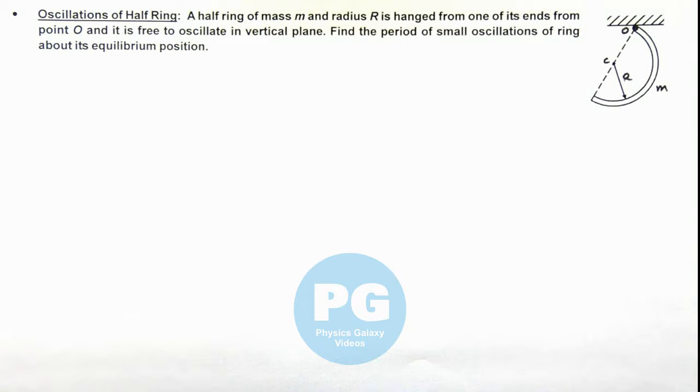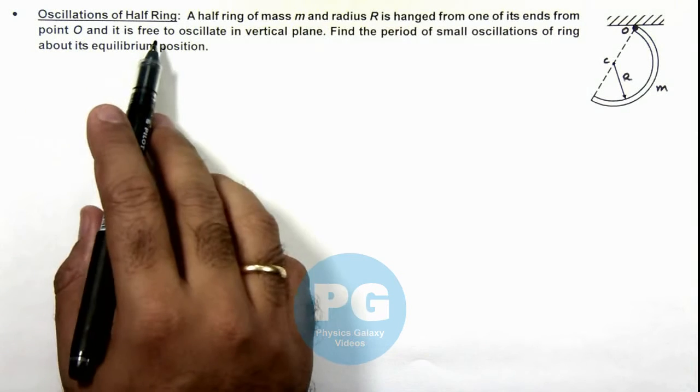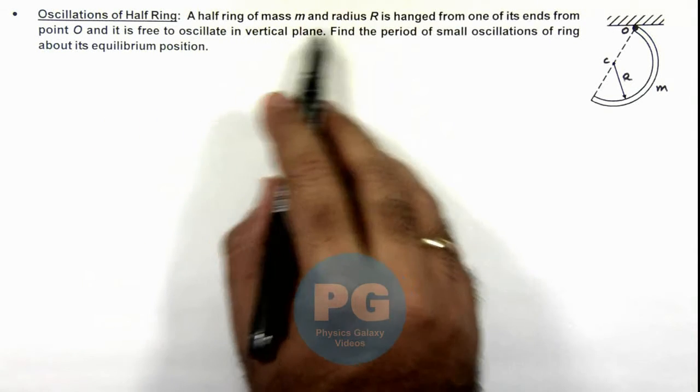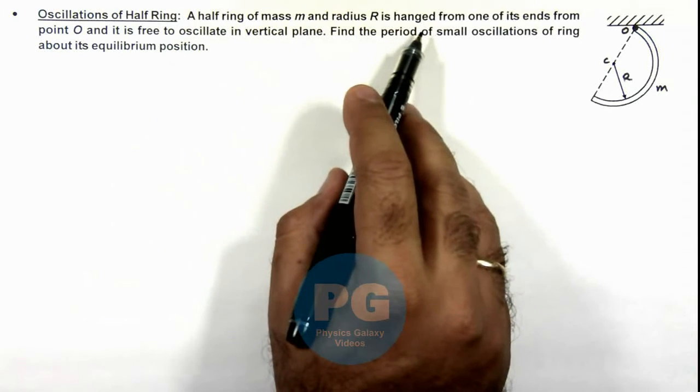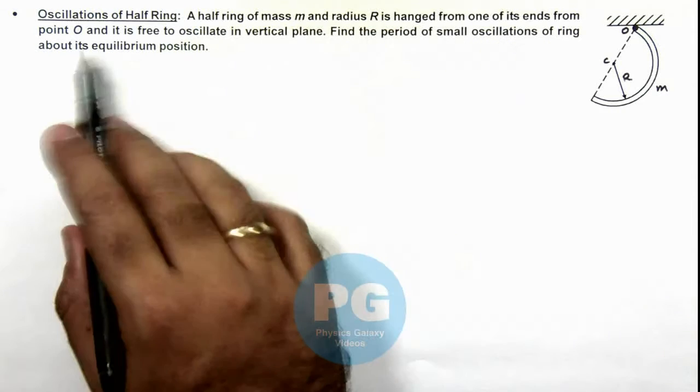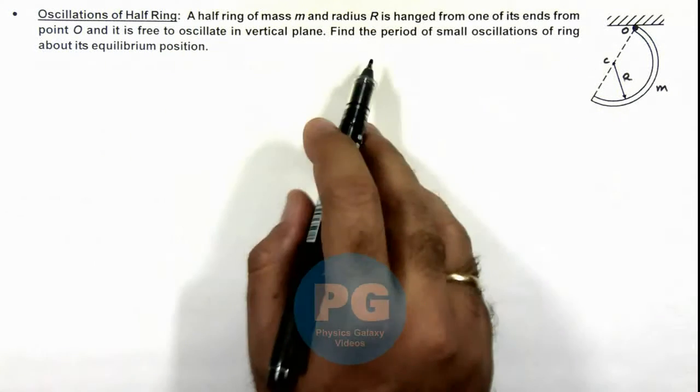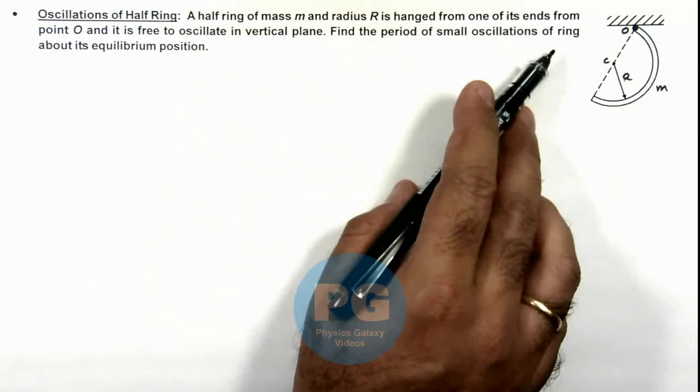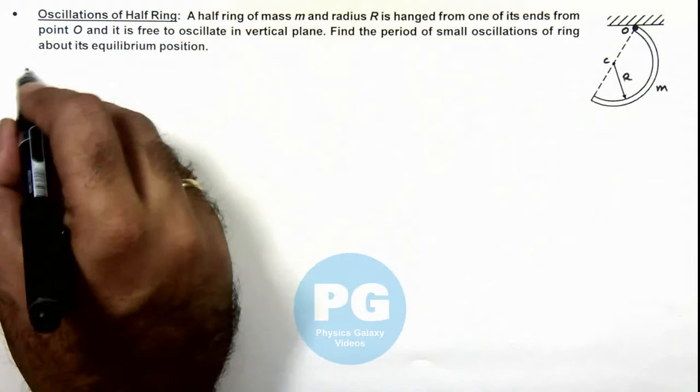In this illustration we'll study the oscillations of a half ring. Here we are given that a half ring of mass m and radius R is hanged from one of its ends from point O, and it is free to oscillate in vertical plane. We are required to find the period of small oscillations of this half ring from its equilibrium position.